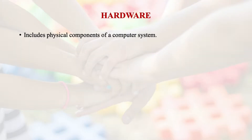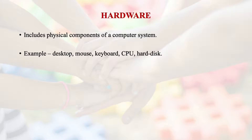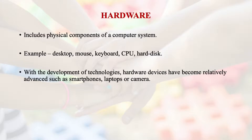When I talk about operating software, it can be iOS or Android — different softwares have different compatibility towards a particular application software. Hardware is like a brain — it includes the physical components of a computer system. For example, a desktop, mouse, wireless mouse or touchpad, keyboard, CPU, and hard disk. With the development of technologies, hardware devices have become relatively advanced, such as smartphones, laptops, or cameras.